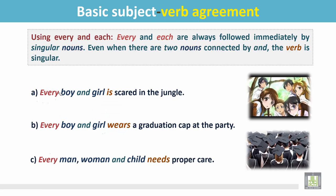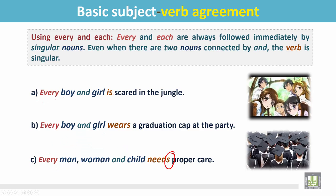Another example: 'Every man, woman, and child needs proper care.' Every is followed by these singular nouns — man, woman, and child. Add 's' with the present simple form of the verb. Every means a singular subject.